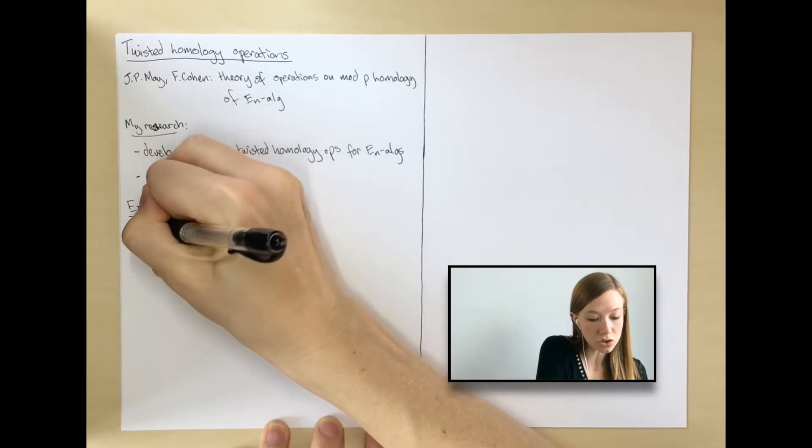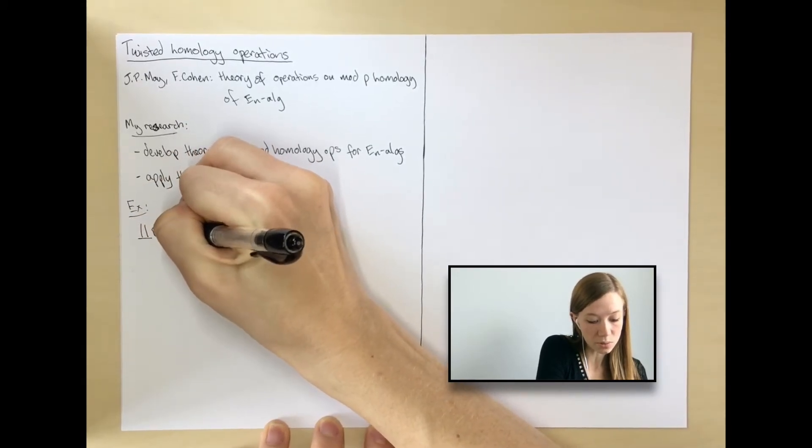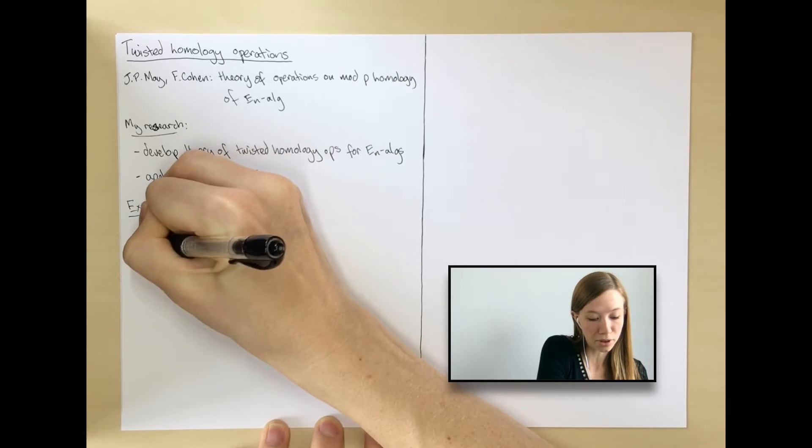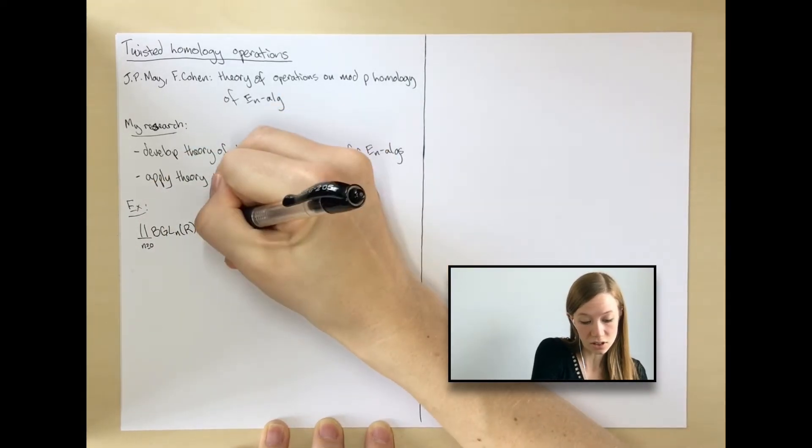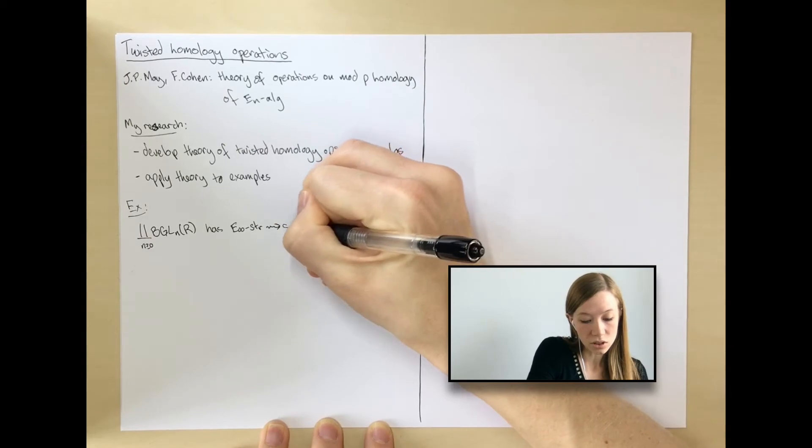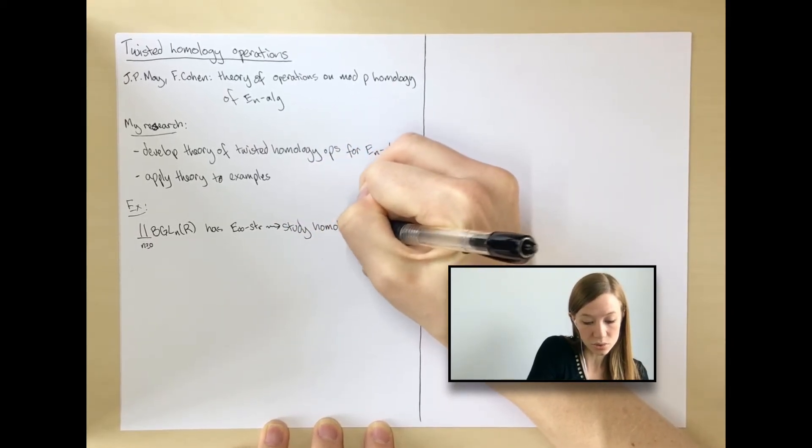We can consider general linear groups. We'll take the disjoint union of classifying spaces of general linear groups of a ring R. This has a well-known E-infinity structure, and this E-infinity structure can be used to study homological stability of the general linear groups.